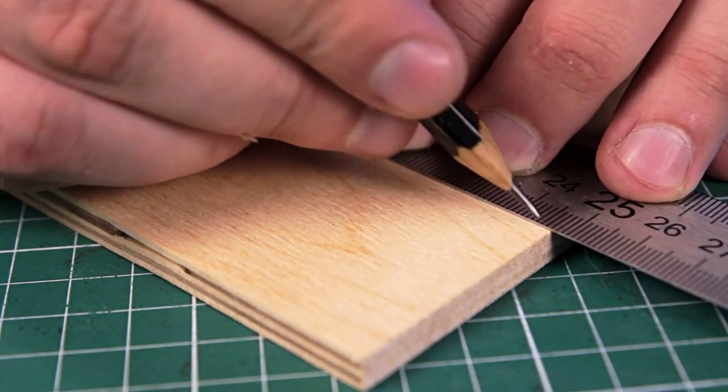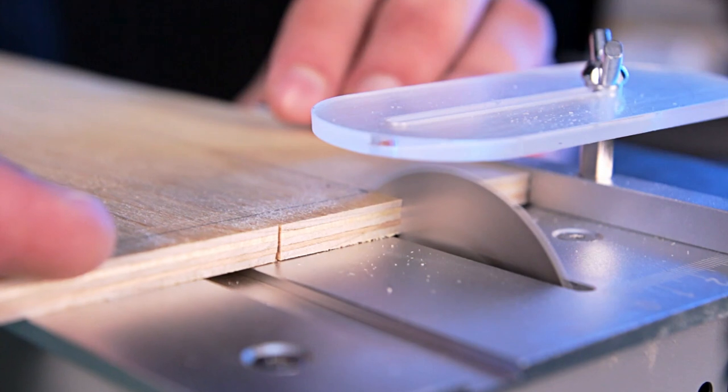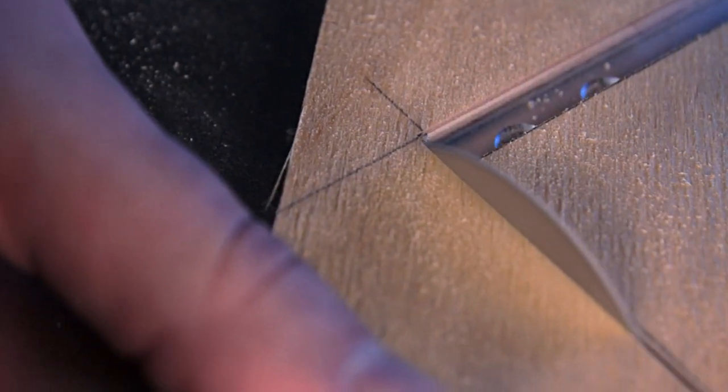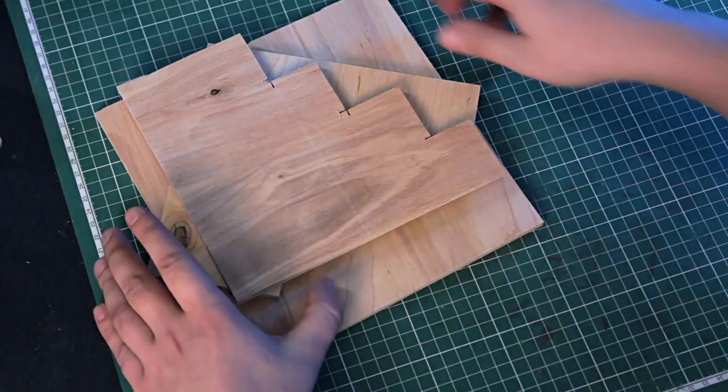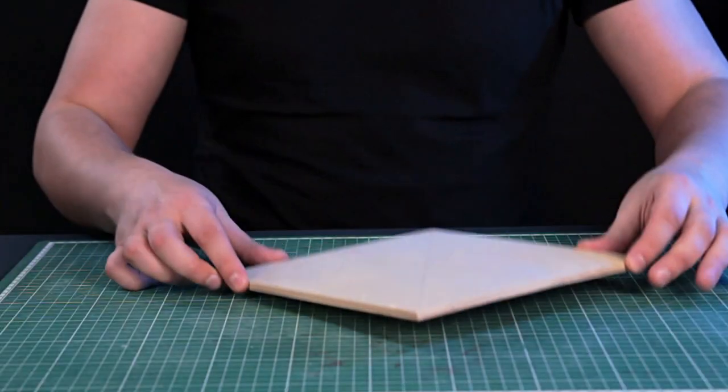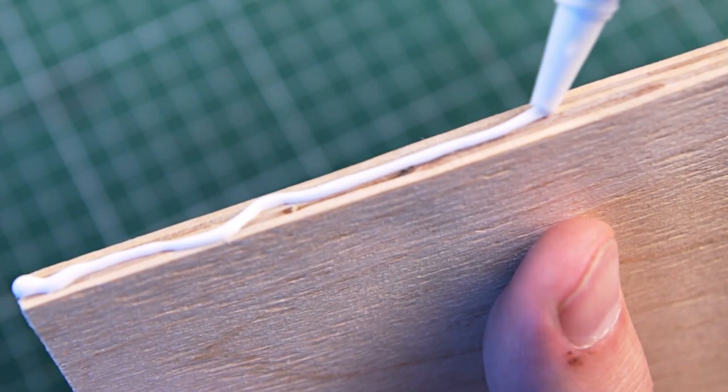For the frame I used 4 mm plywood and cut the necessary parts with a table saw. But you can use a coping saw or jigsaw. I glue all the pieces together with white wood glue.